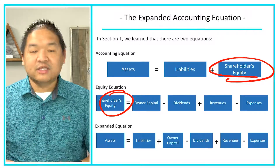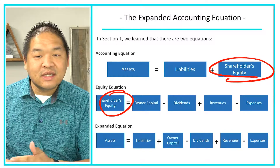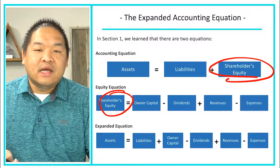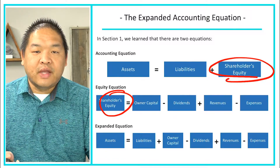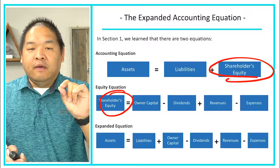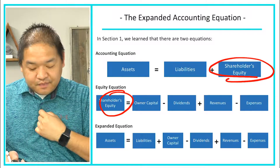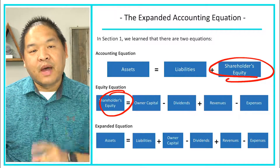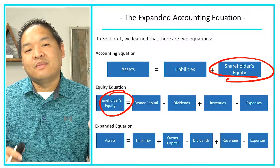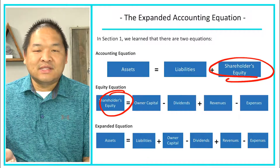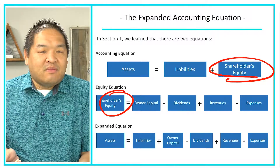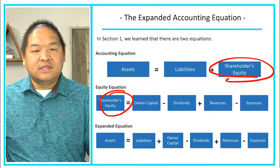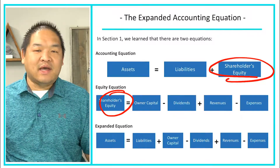This gives us our expanded equation, and this is the expanded equation you need to know as we build the key that's going to help you learn journal entries. Looking at this equation, my problem is that there are minus signs, and I don't necessarily like minus signs. So what can we do from algebra to eliminate them?